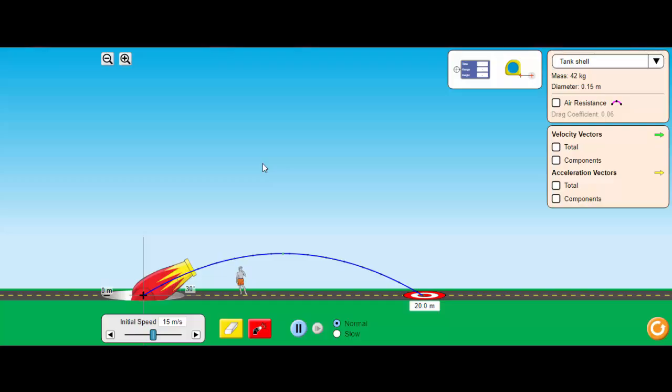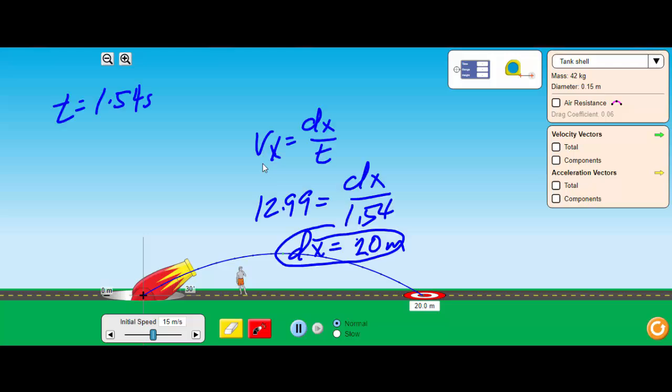So when you're working a problem like this, break your vectors down, find your X and your Y. Remember to use your Y velocity anytime you're using gravity because that is your vertical, and then use your constant formula which is your VX is equal to DX over T. Use this one once you find it because this is constant.